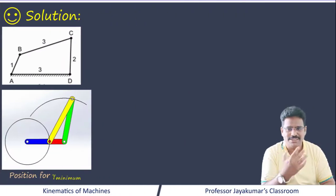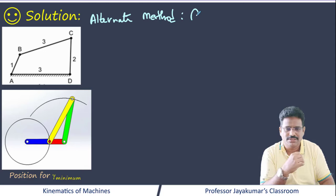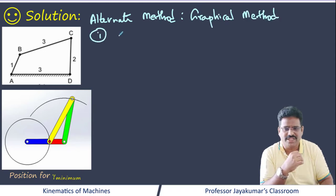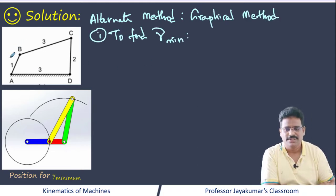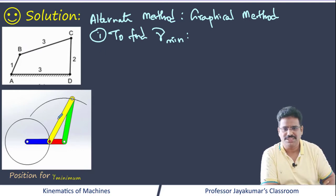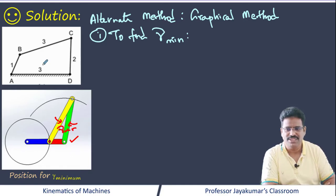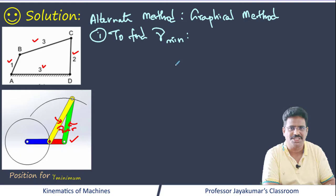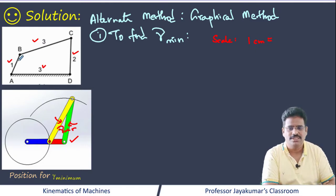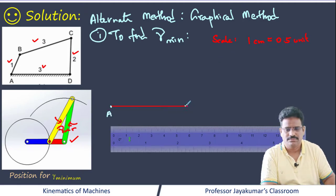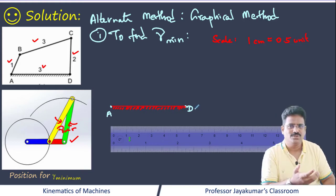We can solve the same problem by the graphical method. To find the minimum transmission angle graphically, we know this is the position of the four links when theta is 0 degrees. Using the link lengths, we draw a geometrical construction to a suitable scale — for example, 1 centimeter equals 1 unit of length. I have drawn the frame to a suitable scale.